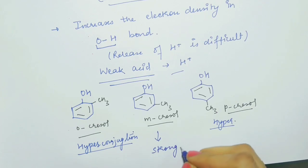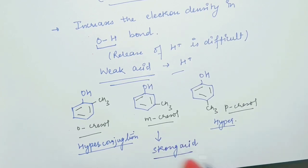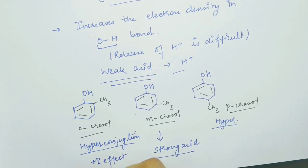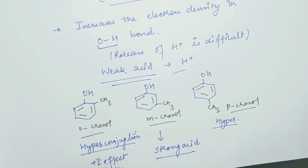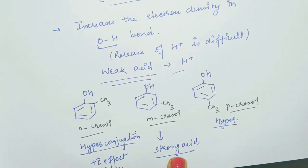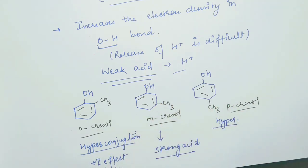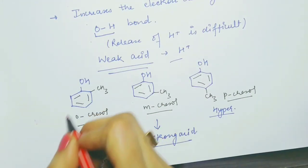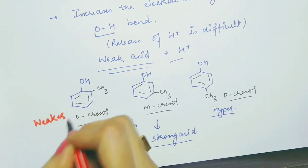So meta-cresol will become a stronger acid as compared to ortho and para. In case of ortho-cresol, the +I effect also dominates. So in comparison, in meta-cresol it is a stronger acid due to no hyperconjugation effect. But in the case of para and ortho-cresol, in ortho-cresol both effects — hyperconjugation as well as +I effect — are operating, making it a weaker acid.